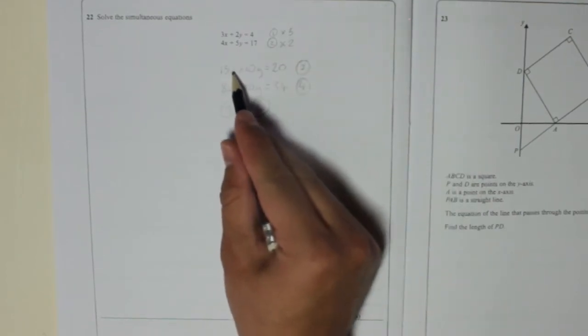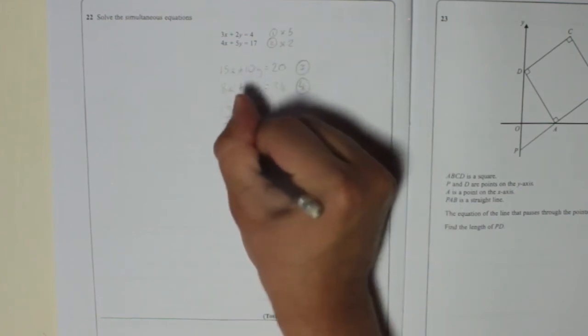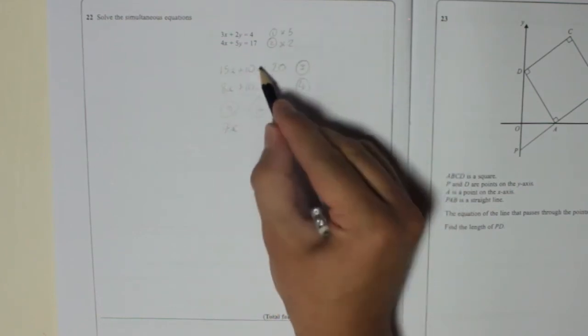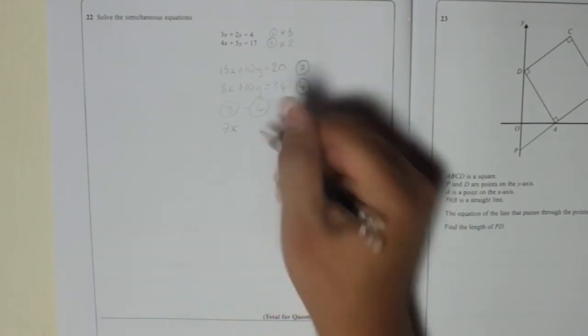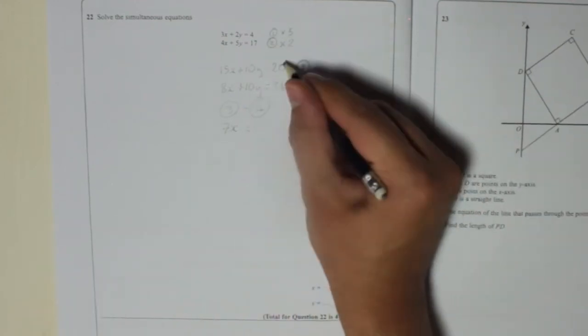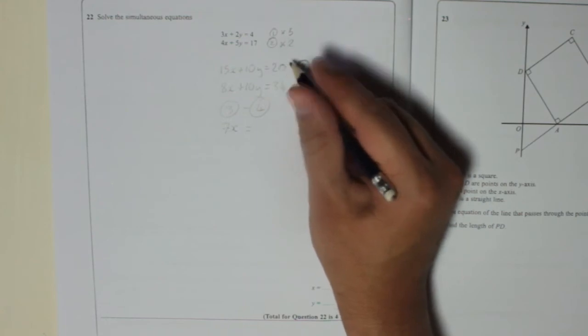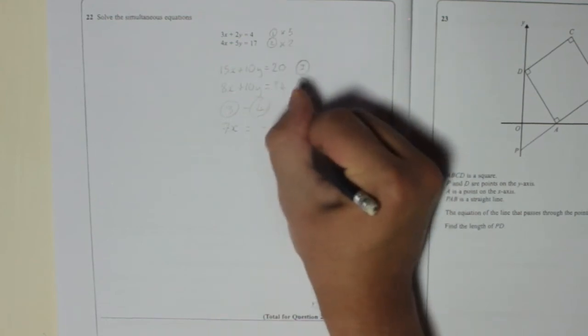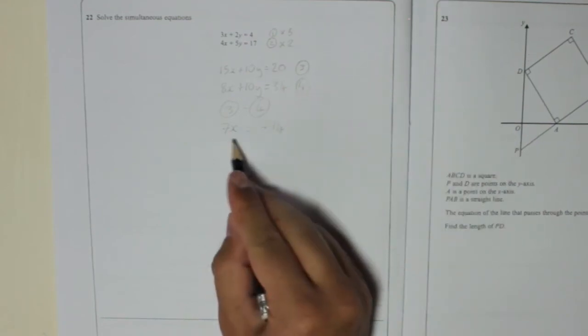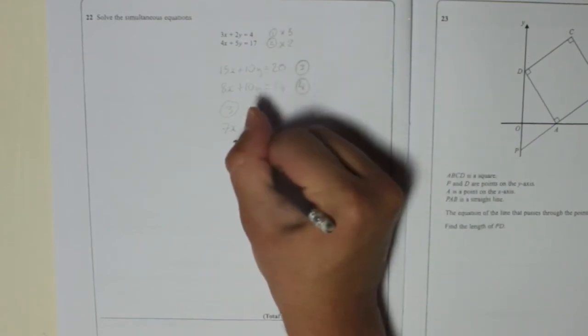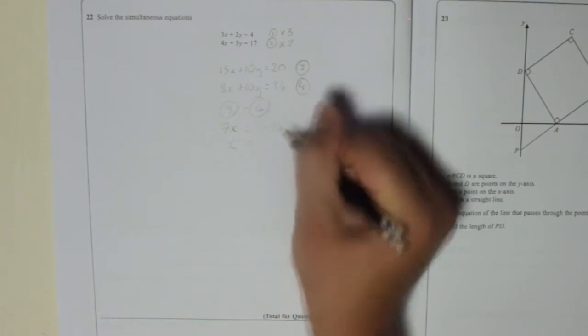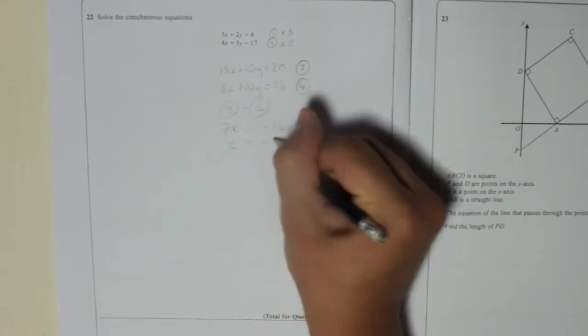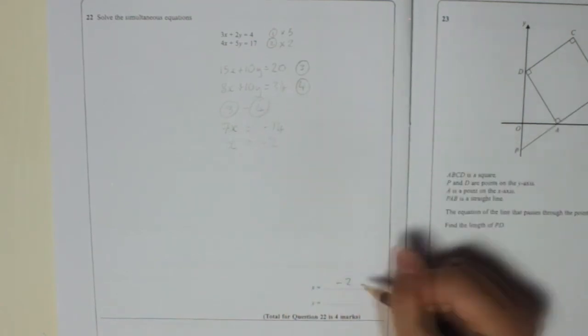So 15x take away 8x is 7x. 10y take away 10y is nothing, so it's gone. That's what we wanted. And then 20 take away 34. Well, 34 take away 20 is 14, so 20 take away 34 is minus 14. So if 7x is minus 14, x equals minus 14 divided by 7, which is minus 2. So I've got minus 2 for x.